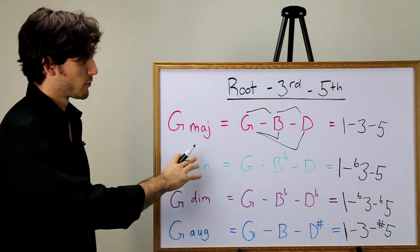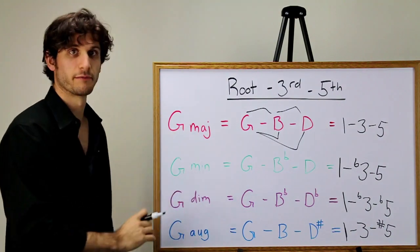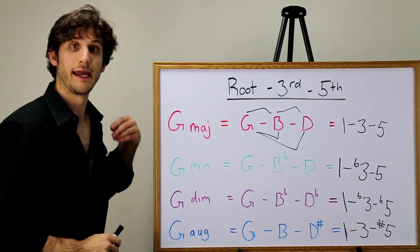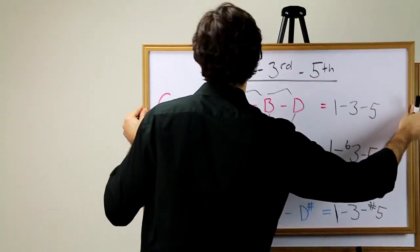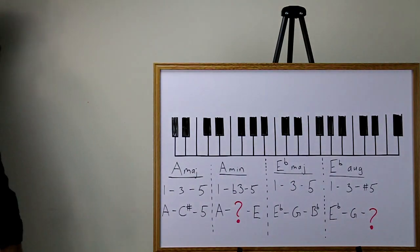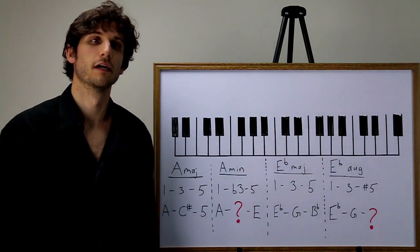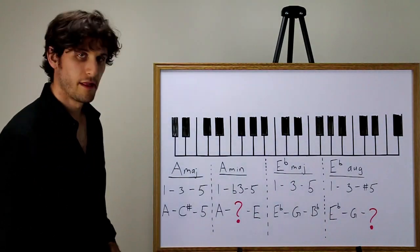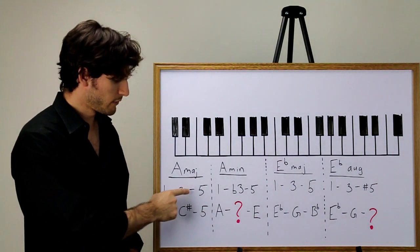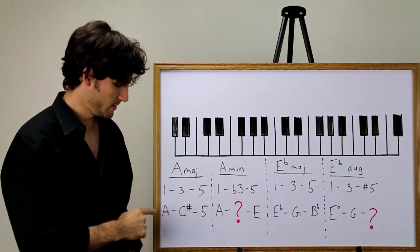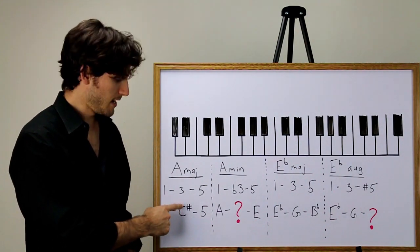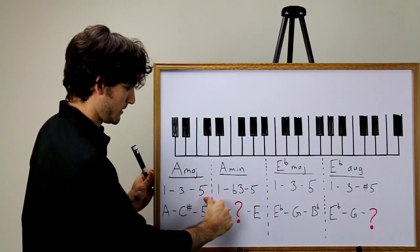With other chords that have more sharps and flats than the basic major chord, this can be a little bit more confusing. Let's look at another example, A major. According to our system, A major chord is written as one, three, five. The one is A, the three is C sharp, and the five is E.